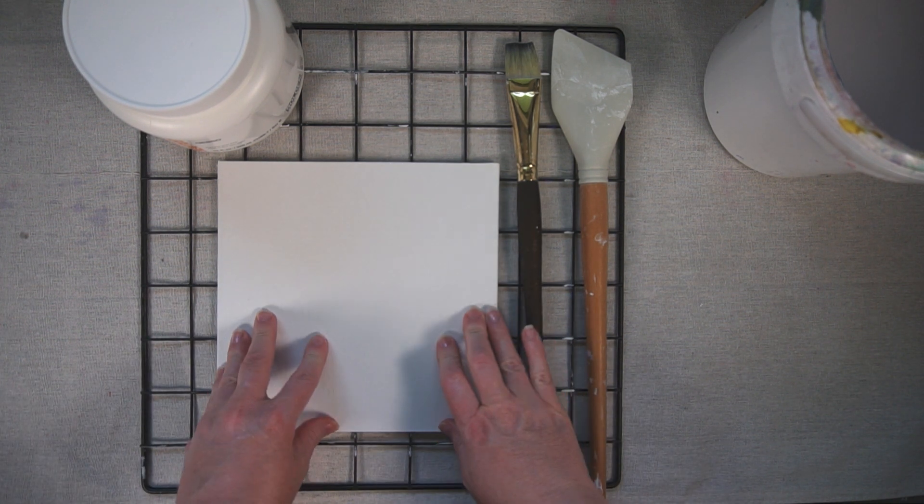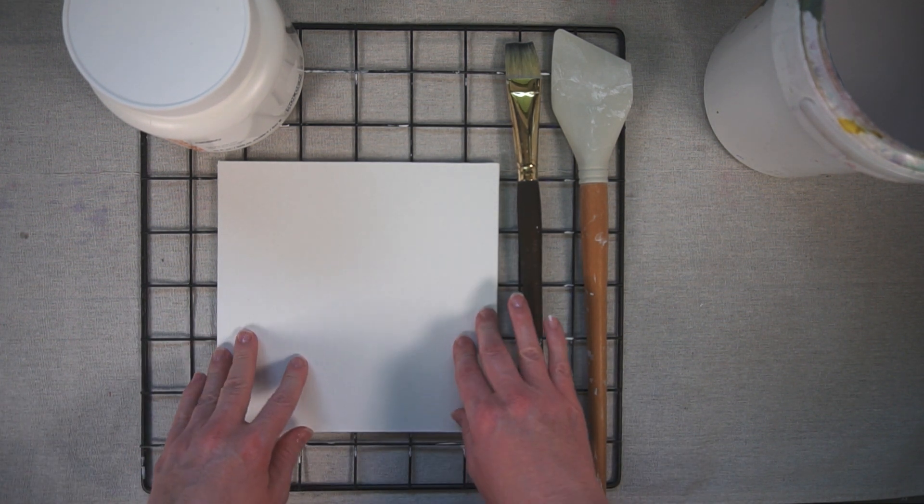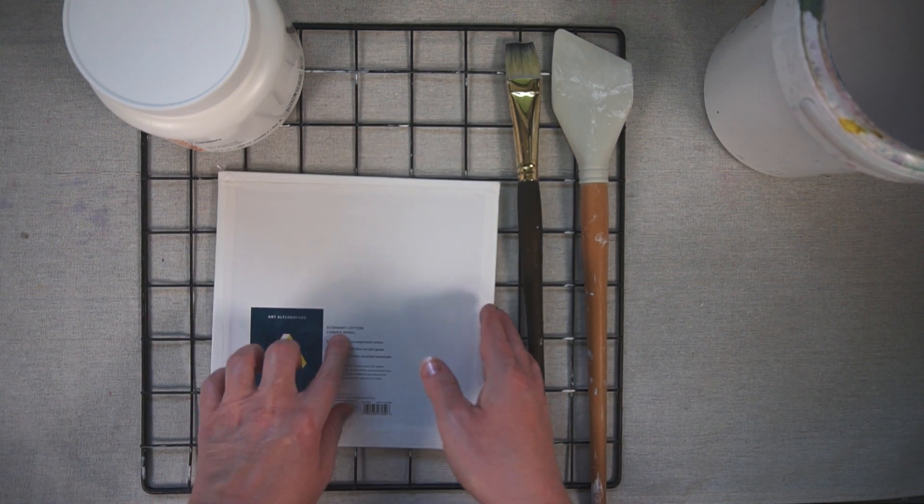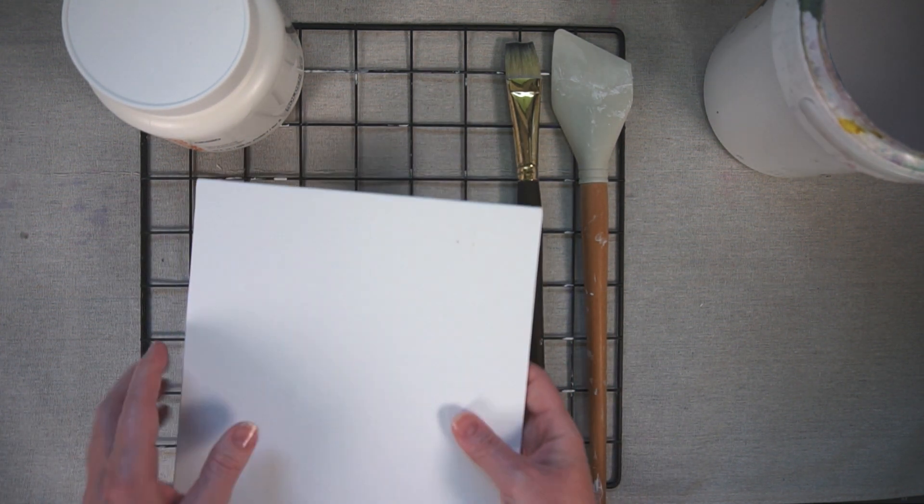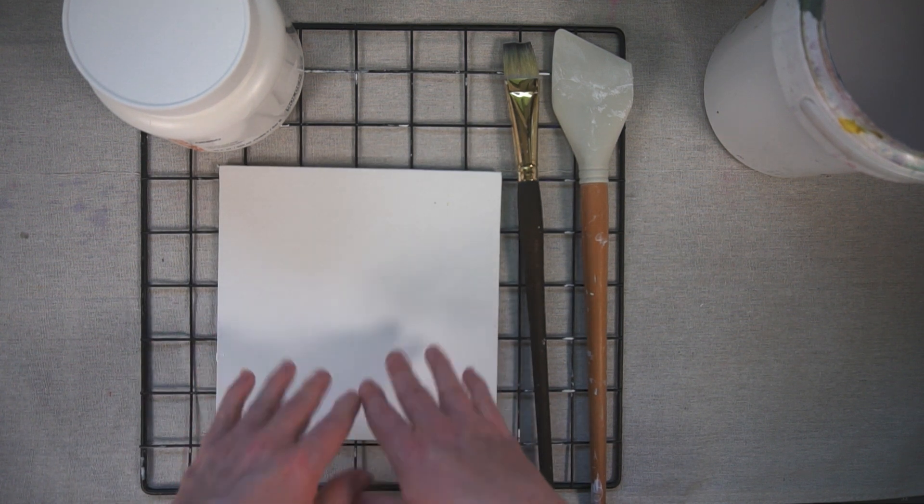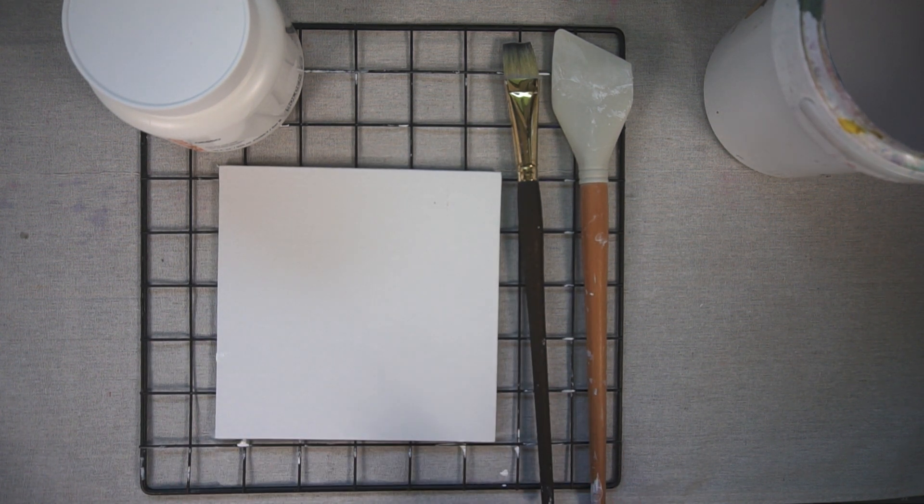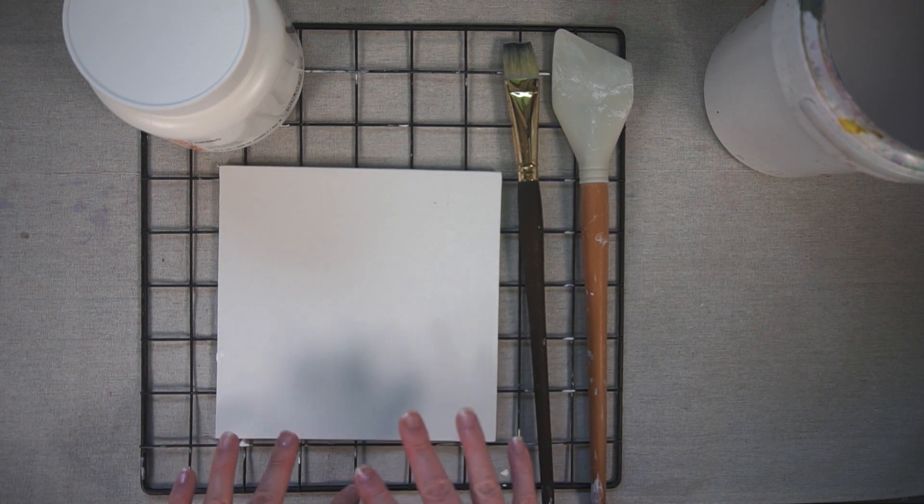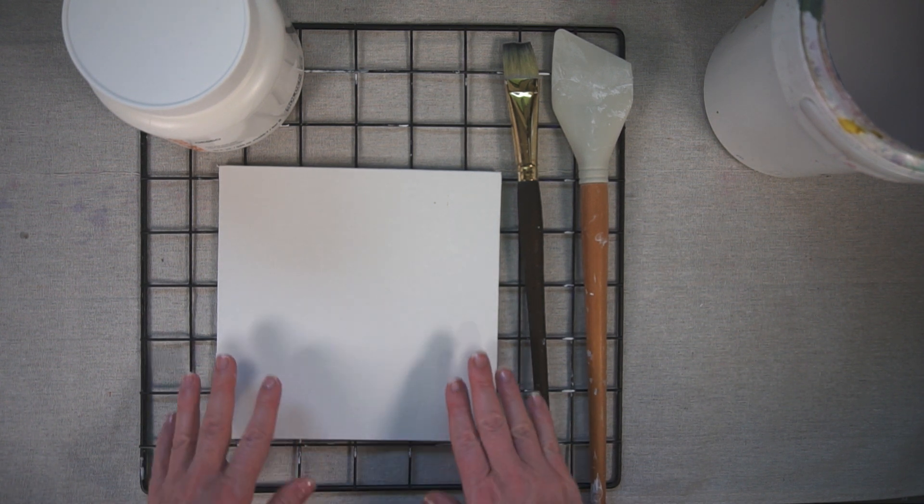Now I often use canvas panels that are really inexpensive. If you look at this one it says right on the back economy cotton canvas panel, and while it comes pre-gessoed, I find that adding another two or three coats of my own gesso really helps my painting experience with these types of panels.